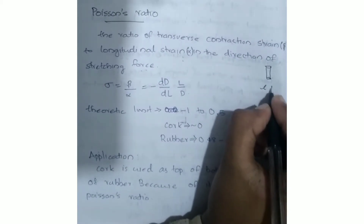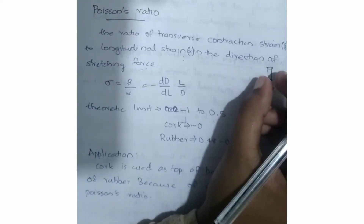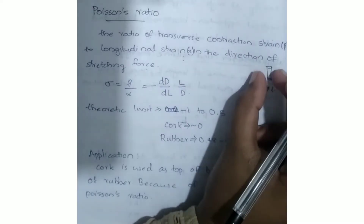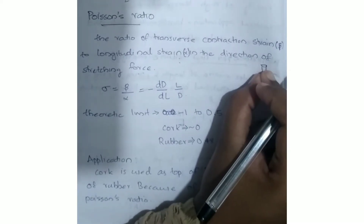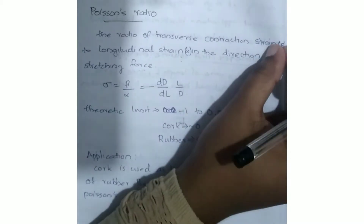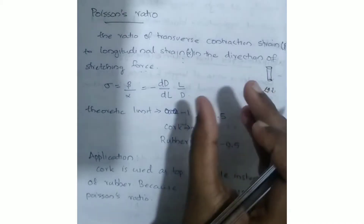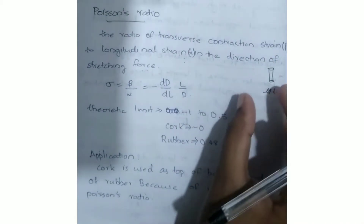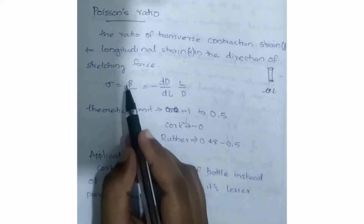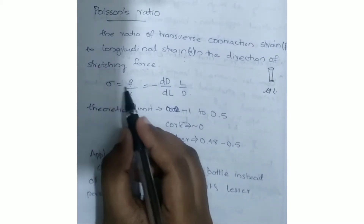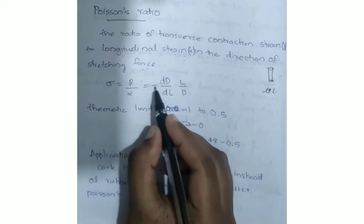Consider a cylinder being pulled here — the cylinder is stretched, increasing in length and decreasing in thickness. The contraction is in thickness. The longitudinal strain alpha and transverse strain beta give us Poisson's ratio sigma equal to minus dd divided by dl, into l by d.